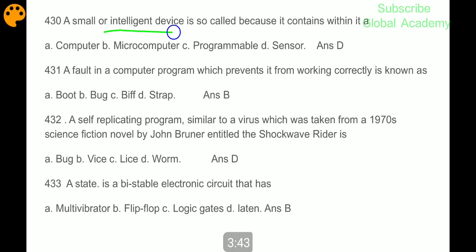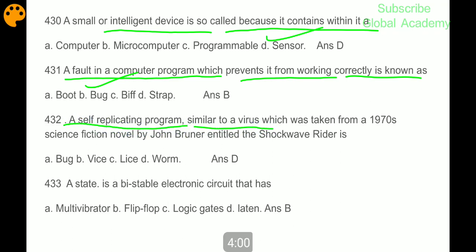A smaller or intelligent device is so called because it contains within it a sensor. A fault in a computer program which prevents it from working correctly is known as bug. A self-replicating program similar to a virus which was taken from a 1970s science fiction novel by John Brunner entitled The Shockwave Rider is worm.